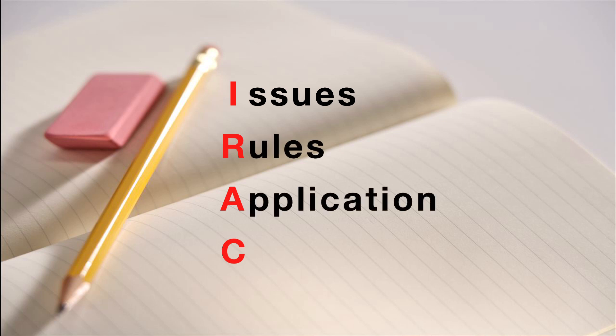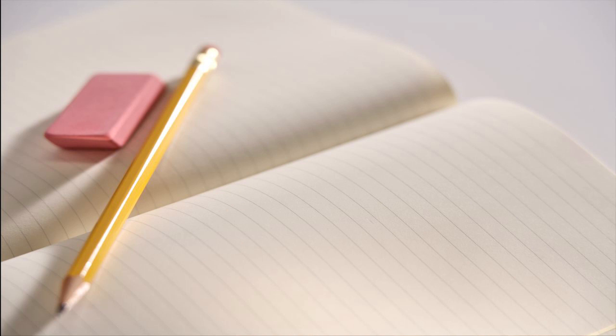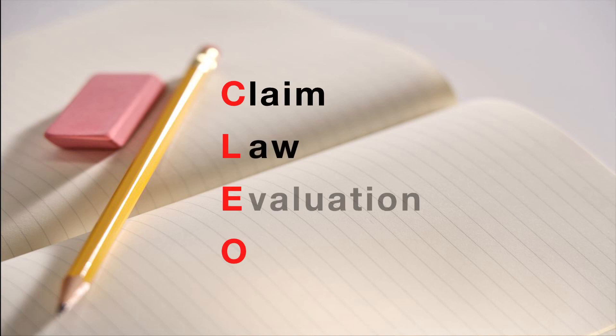What about problem questions? These will usually consist of facts and a direction such as 'advise X,' where X is one of the parties in the fact pattern. The aim is to analyze the facts to identify the legal issues, analyze the law to find the relevant legal rules, apply the law to the issues, and then reach a conclusion. IRAC is a well-known law student acronym meaning Issues, Rule, Application, and Conclusion. There is also CLEO — Claim, Law, Evaluation, Outcome — which is more or less the same. The structure of your answer should display that you've identified the issue, for example whether it is an easement question, what the law is, and then analyzed it against the facts.